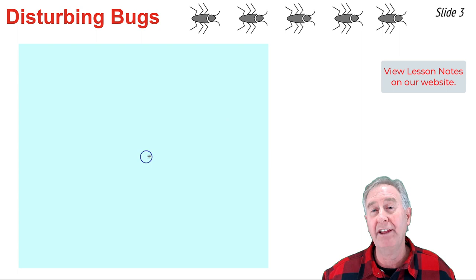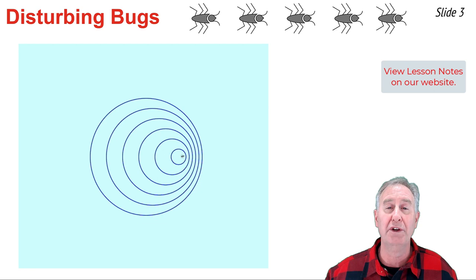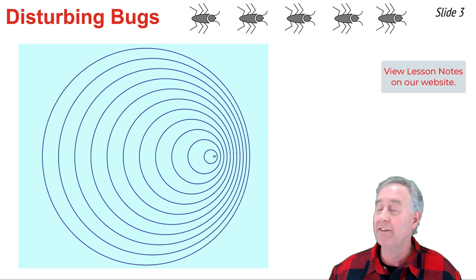But if the bug were to move to the right as it periodically disturbs the water, a series of circular wavefronts would be formed, but each circular wavefront would be centered at a different location, giving the pattern that you see here.